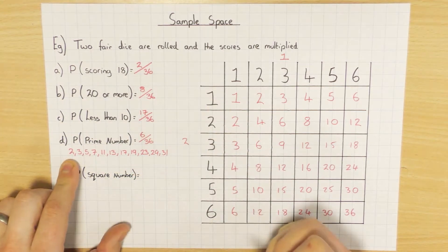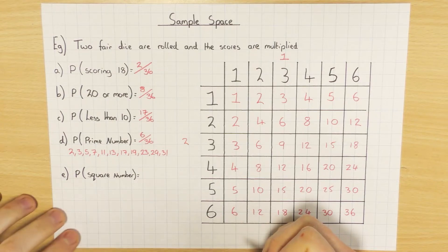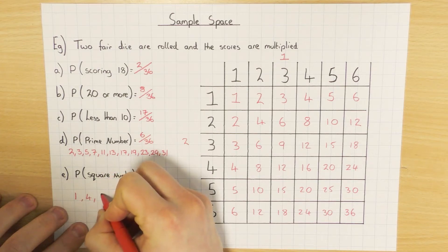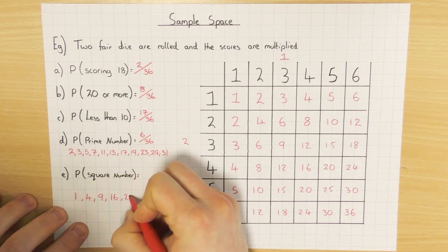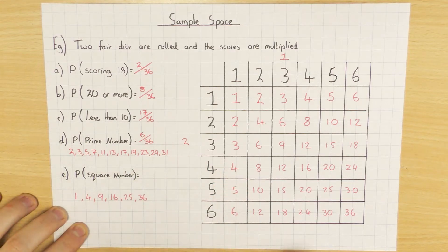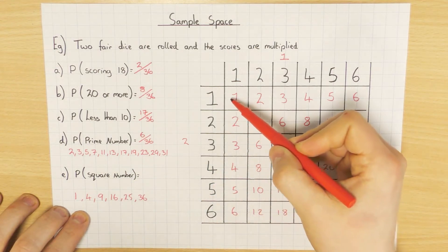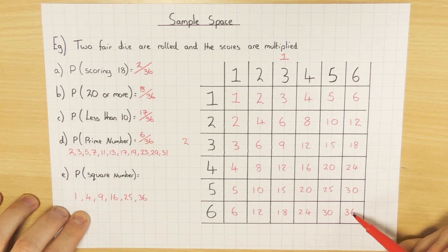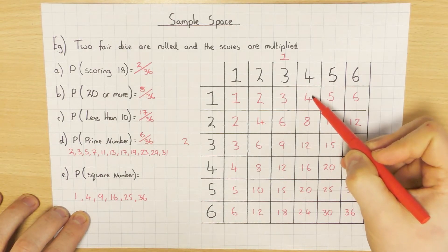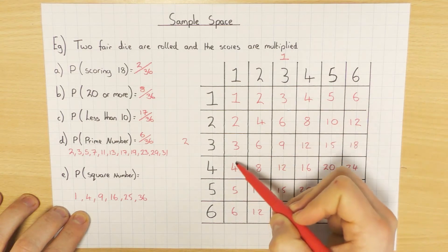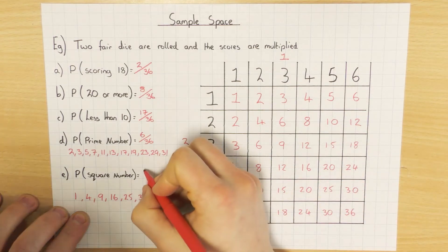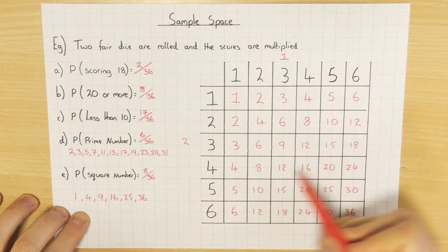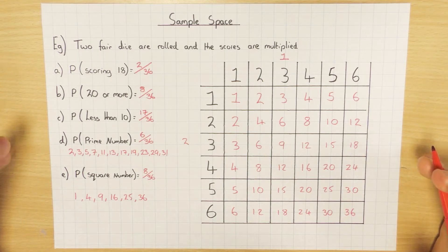Part e: what's the probability of getting a square number? Write the square numbers down: 1, 4, 9, 16, 25, and 36. Looking through the sample space, you'll obviously find the diagonal (1×1, 2×2, etc.) giving 1, 2, 3, 4, 5, 6 - but don't just jump to 6 out of 36. Be careful: there's still a 4 here and a 4 here which are square numbers, giving a total of 8 out of 36. Always double-check and count as you go.